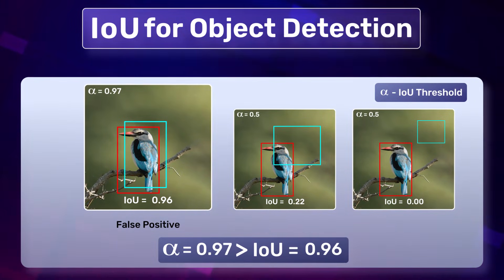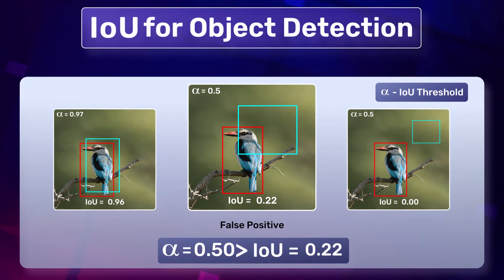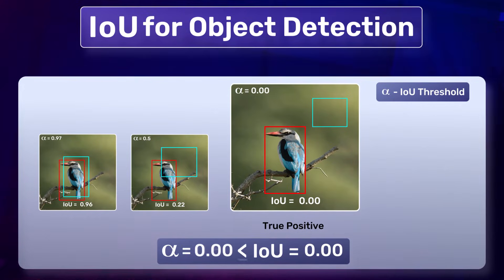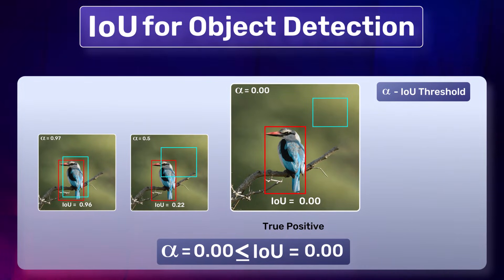Similarly, the second prediction shown above is a false positive due to the threshold. Theoretically, the third prediction can also be a true positive given that we lower the threshold all the way to 0.